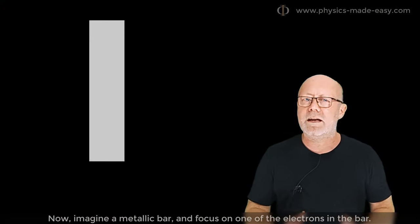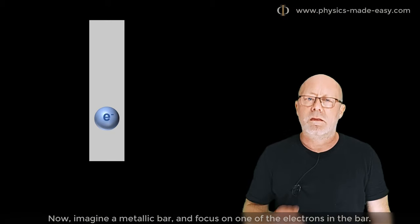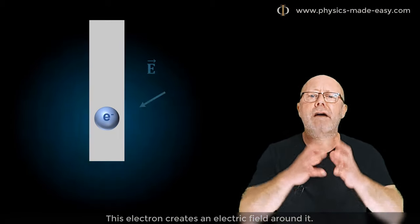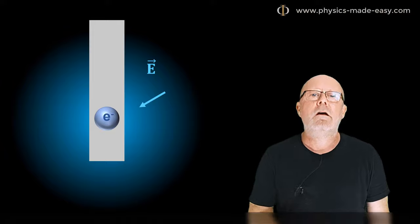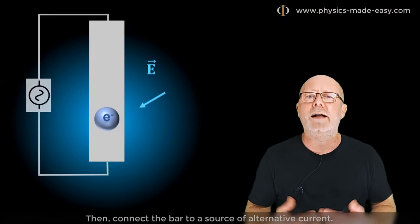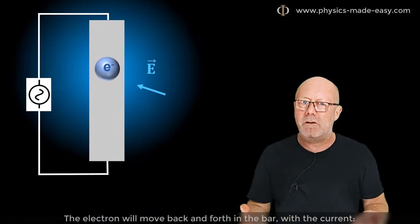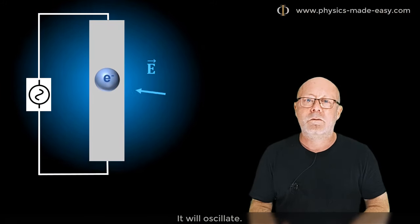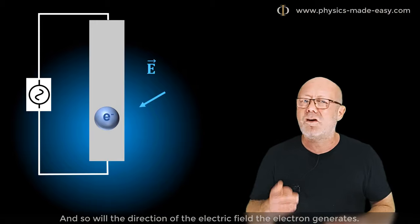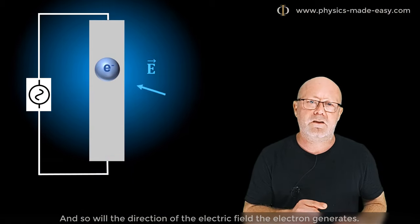Now, imagine a metallic bar and focus on one of the electrons in the bar. This electron creates an electric field around it. Then, connect the bar to a source of alternative current. The electron will move back and forth in the bar with the current. It will oscillate, and so will the direction of the electric field the electron generates.